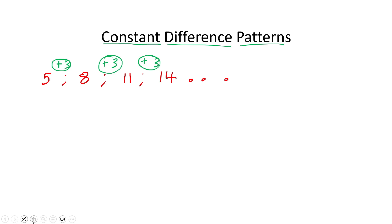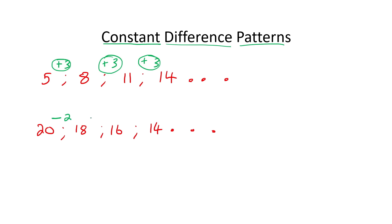Let's say, for example, we have 20, 18, 16, 14, and so on. Now what's happening is we are subtracting two each time. Can you see that? So we call that a constant difference pattern as well.